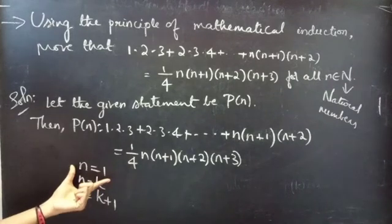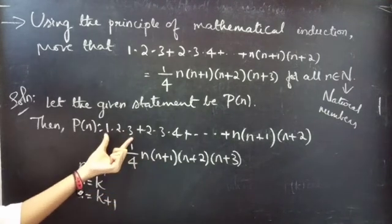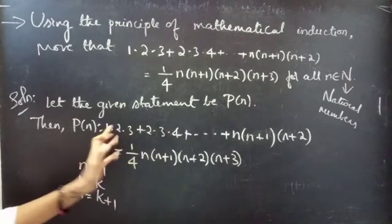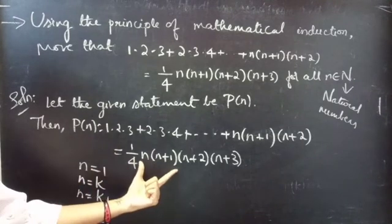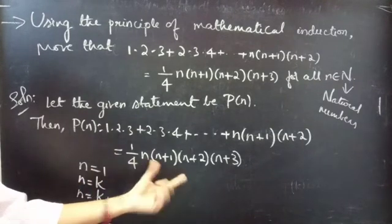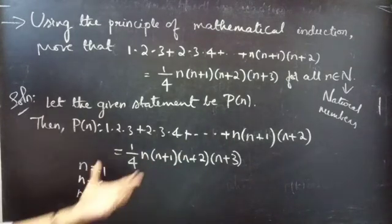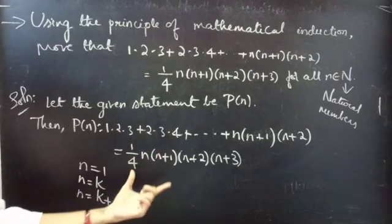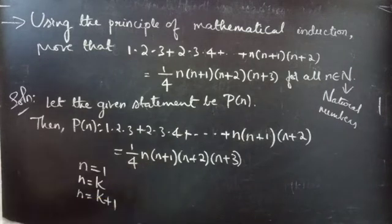For n equals 1, we will take only one term from the LHS. When n equals k, we will take the first k terms from the LHS and substitute k in the RHS. When n equals k plus 1, we will take k plus 1 terms from the LHS and prove for the RHS.